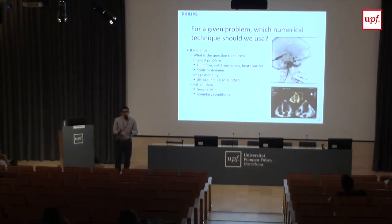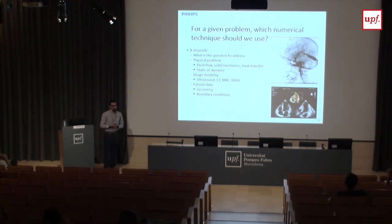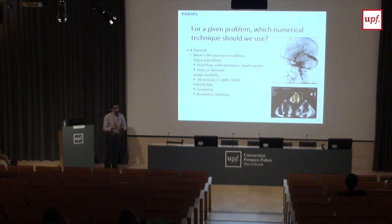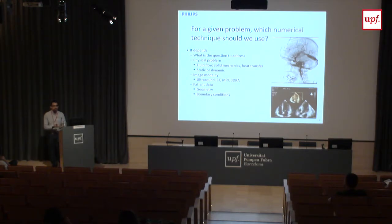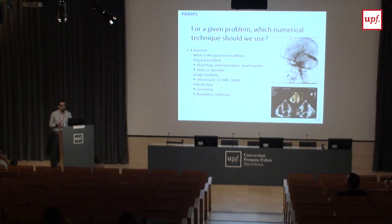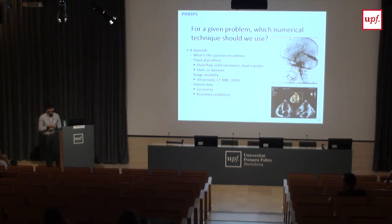The question is: which technique should I use? The answer depends on the real question I want to answer. Is it a fluid problem, a solid problem, heat transfer, or a combination? Is it static or dynamic? Which imaging modality provides the data — ultrasound, CT, MR, 3D echo? Do I have the patient anatomy? Do I have certain boundary conditions? Here are two examples: neurovascular flow and cardiac flow. The first one I'll explain is how we use the Eulerian approach to solve these equations for aneurysm hemodynamics.